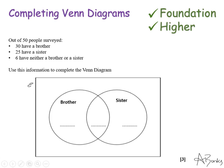Here's a slightly harder question. This one says, out of 50 people surveyed, 30 have a brother, 25 have a sister, 6 have neither a brother or a sister. Use this information to complete the Venn diagram. So there's only one piece of information they've given me there that I can fill in straight away, and that is that 6 have neither a brother or a sister. So I'm going to put the 6 on the outside there.